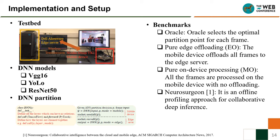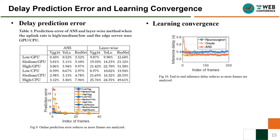We modify the TensorFlow core function or PyTorch forward function to realize DNN partition. The benchmarks used to evaluate ANS are Oracle, Pure Edge Offloading, Pure On-Device Processing, and Neurosurgeon — an offline profiling approach for collaborative deep inference. From Table 1 and Figure 9, we can see ANS has a lower delay prediction error than layer-wide prediction, and can achieve good prediction with only 20 frames. Figure 10 shows the end-to-end inference delay of ANS, Oracle, and Neurosurgeon. ANS can achieve Oracle-level performance quickly, and it is better than Neurosurgeon because ANS considers inter-layer optimization.